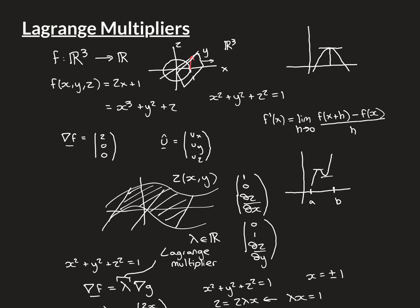We're now going to apply the Lagrange multiplier technique to a more complicated problem. We're going to keep the same surface, the unit sphere, but now we're going to have a more complicated function that we're trying to find the stationary points of over that surface. By finding the stationary points we'll then be able to find the maximum and the minimum.